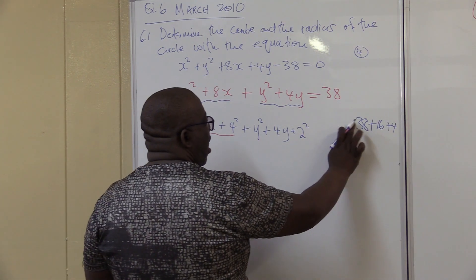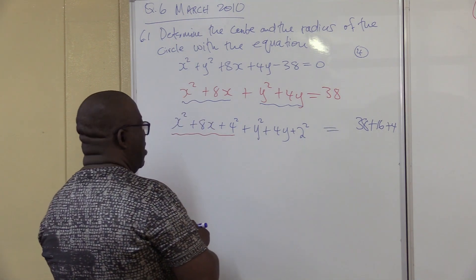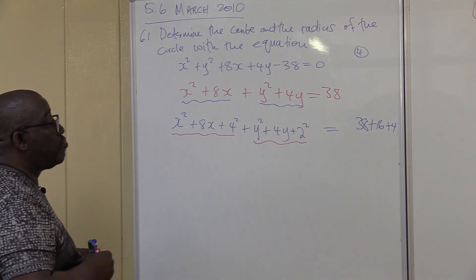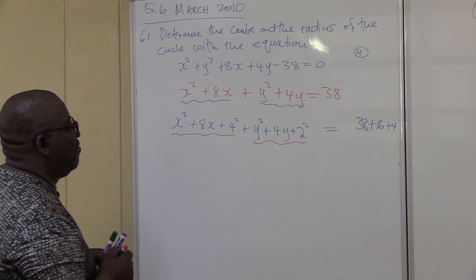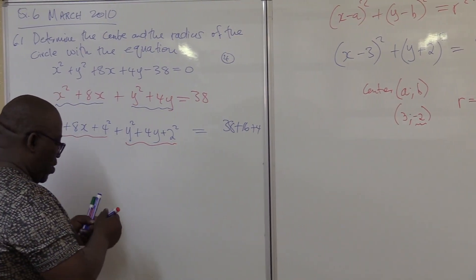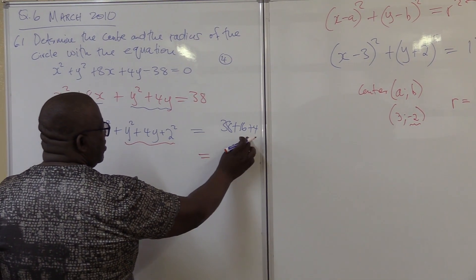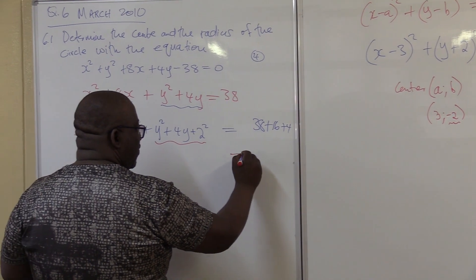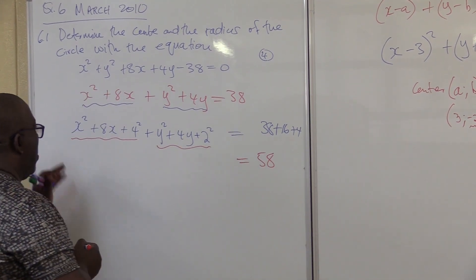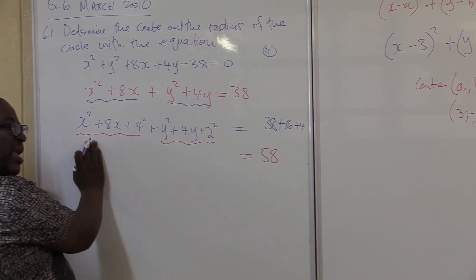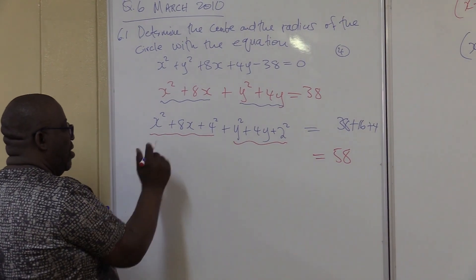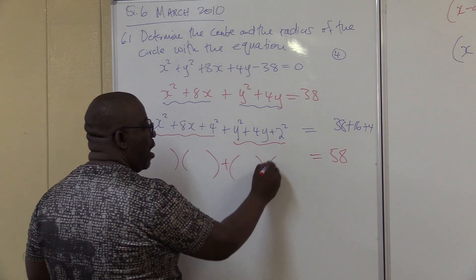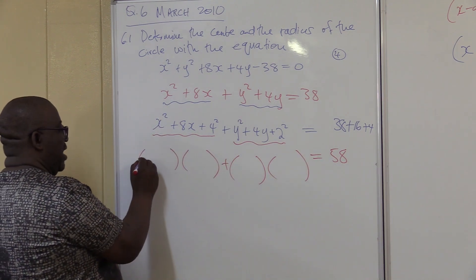That's what we have. This is exactly what I wanted. If I check the other side: 38 plus 16 plus 4 — that is 58. Now I can factorize this. Let's factorize: this is x squared plus 8x plus 4 squared — I've put it as 4 squared because it makes me see the factors I'll be using here.